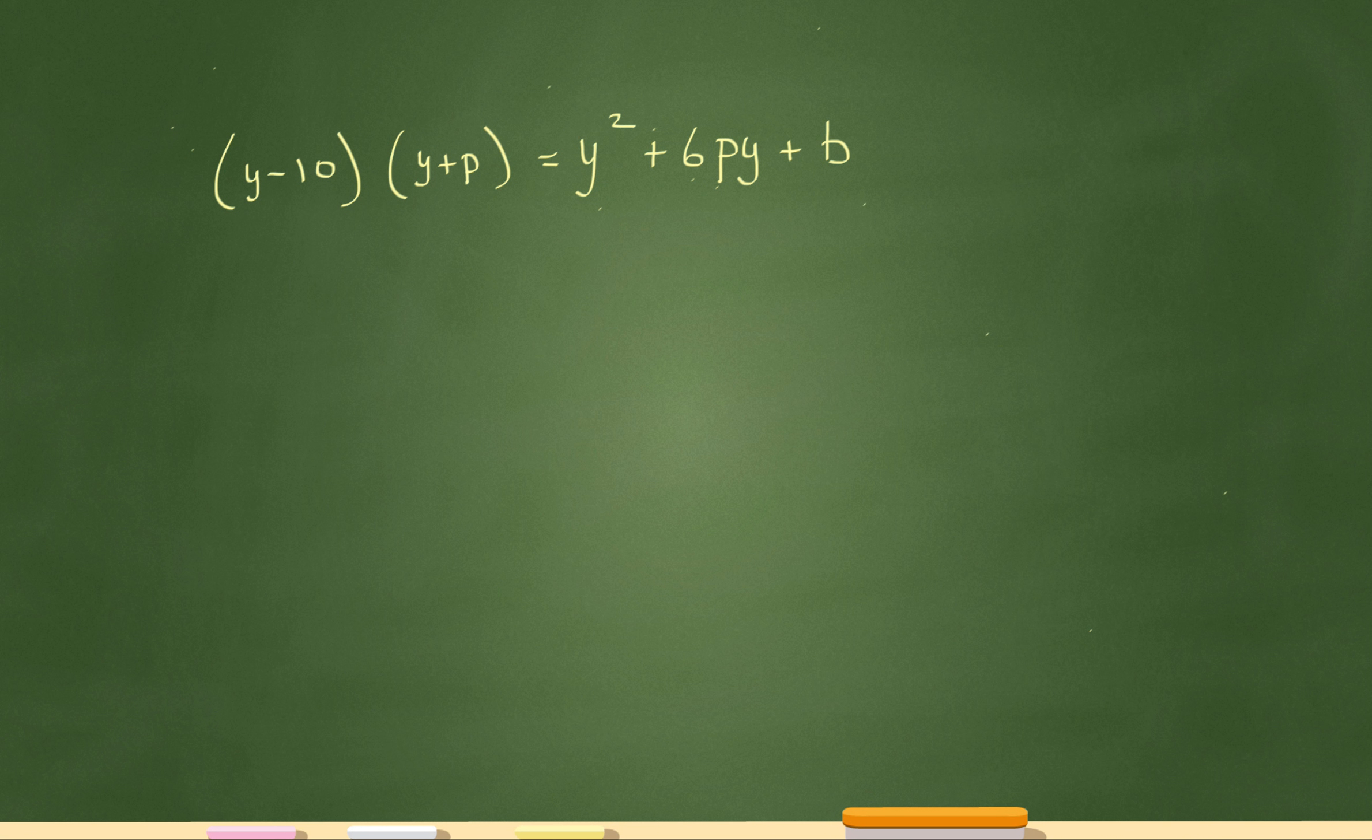The left side and the right side, I have both of these things equal to each other. So y minus 10 times y plus p equals y squared plus 6py plus b. And the question is saying, what is the value of b?